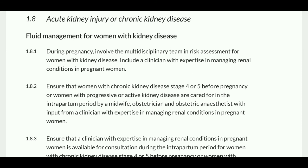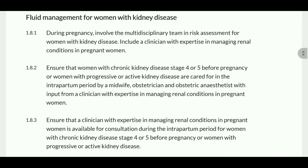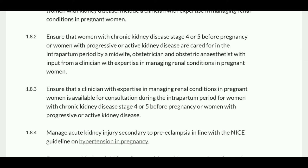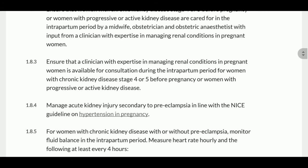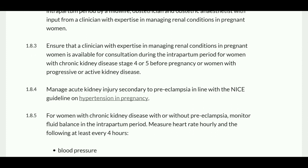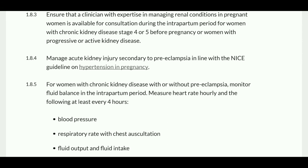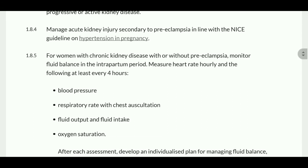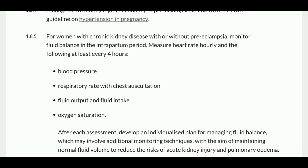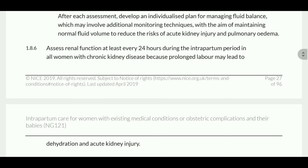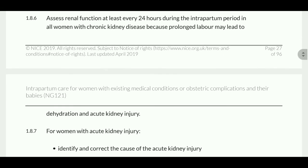Regarding acute kidney injury or chronic kidney disease (CKD): during pregnancy, involve the multidisciplinary team in risk assessment. Ensure women with CKD stage 4 and 5 before pregnancy, or with progressive active kidney disease, are cared for in the intrapartum period by a midwife, obstetrician, and obstetric anesthetist with input from a clinician with expertise in managing renal conditions. Ensure a clinician with expertise in managing renal conditions in pregnant women is available for consultation during the intrapartum period. Manage acute kidney disease secondary to preeclampsia in line with the NICE guideline. For women with CKD with or without preeclampsia, monitor fluid balance and measure heart rate hourly and at least four-hourly assess blood pressure, respiratory rate, fluid output, input, and oxygen saturation. Assess renal function at least every 24 hours during the intrapartum period.